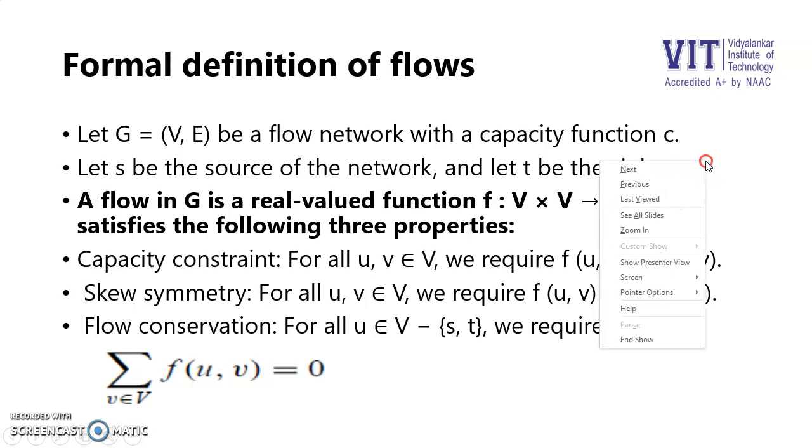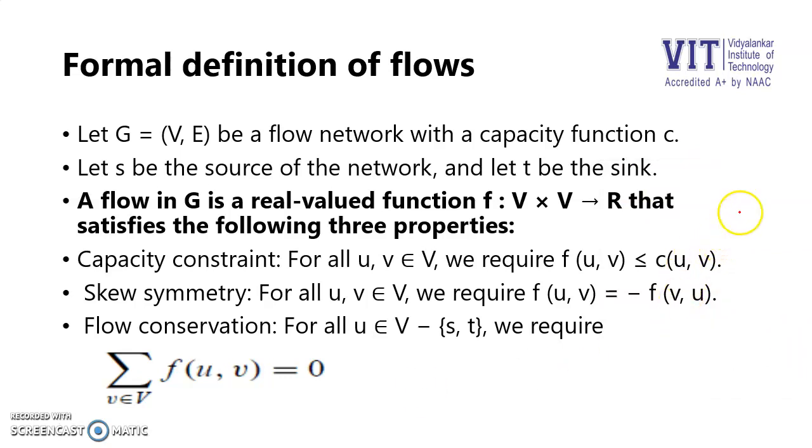It should satisfy three properties. The first property is the capacity constraint. What it says is that for every vertex pair (u,v) that belongs to V, the flow through that vertex pair or through that edge should be less than or equal to the capacity: f(u,v) ≤ c(u,v).